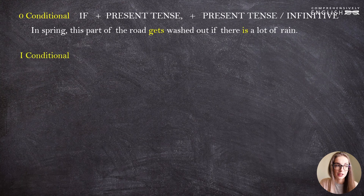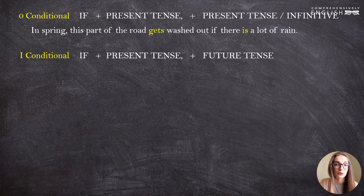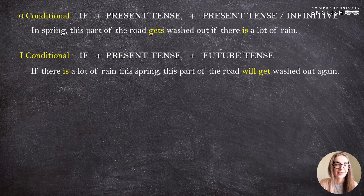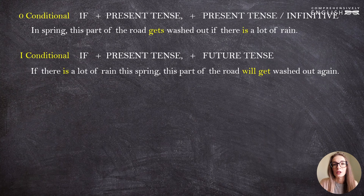The first conditional uses the formula: if plus a present tense plus a future tense. For example: 'If there is a lot of rain this spring, this part of the road will get washed out.' You can use any present tense in the subordinate clause, and you have variations in the main clause as well — future simple, the infinitive, or progressive future tenses if you need to show that the action is a process.